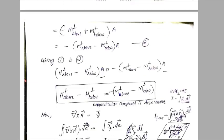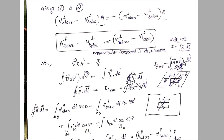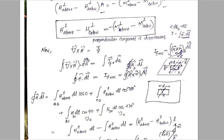Substituting and canceling the area of the cross-section of the pill box, we obtain the boundary condition for the perpendicular component of H. The perpendicular component of the magnetizing field H is discontinuous across the boundary by a non-zero amount.